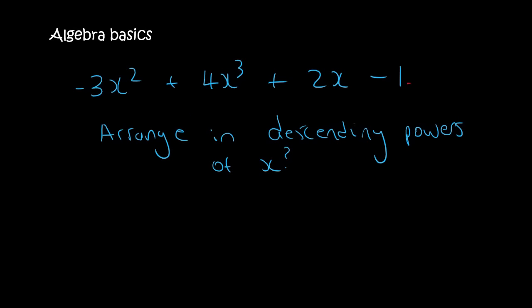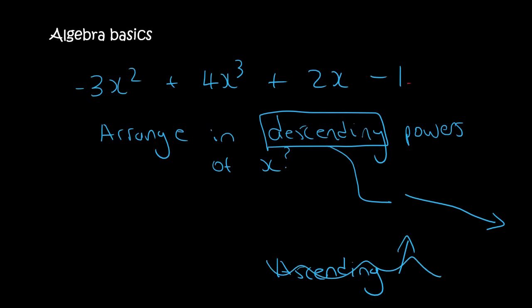Here's a question. Arrange in descending powers of x. So descending, you need to know that that means going downwards. If we said ascending, then it means going upwards. Powers are these things, they're also called exponents. So descending means from biggest to smallest. So this one has a 2, this one has a 3, this one seems to have nothing but remember that actually means it has a 1, and this one really has nothing so that one's got a 0. So the largest one would be this one, so you put that one in the front. The next one is the 2, the next one is this, and then lastly at the end, you've got minus 1.